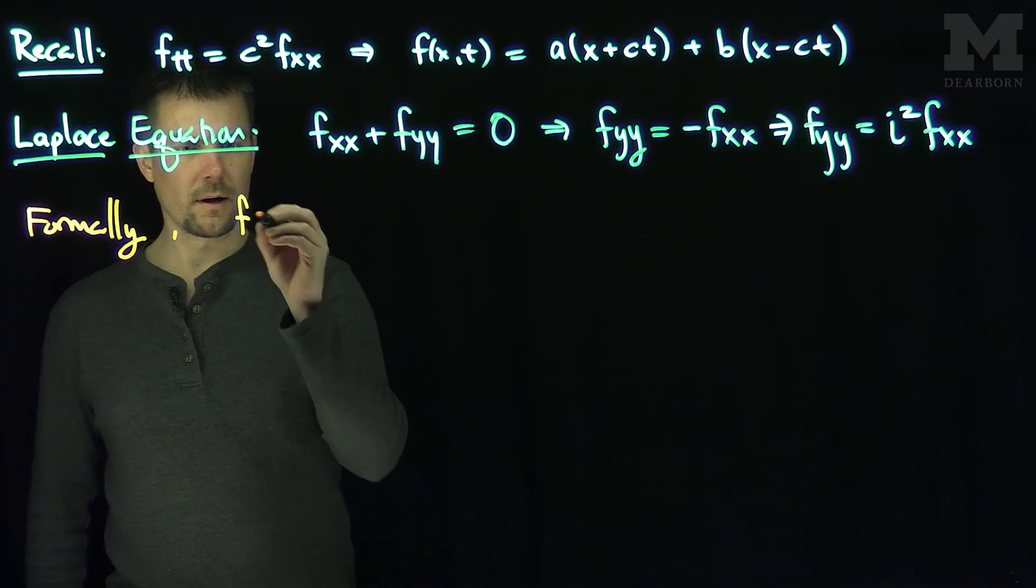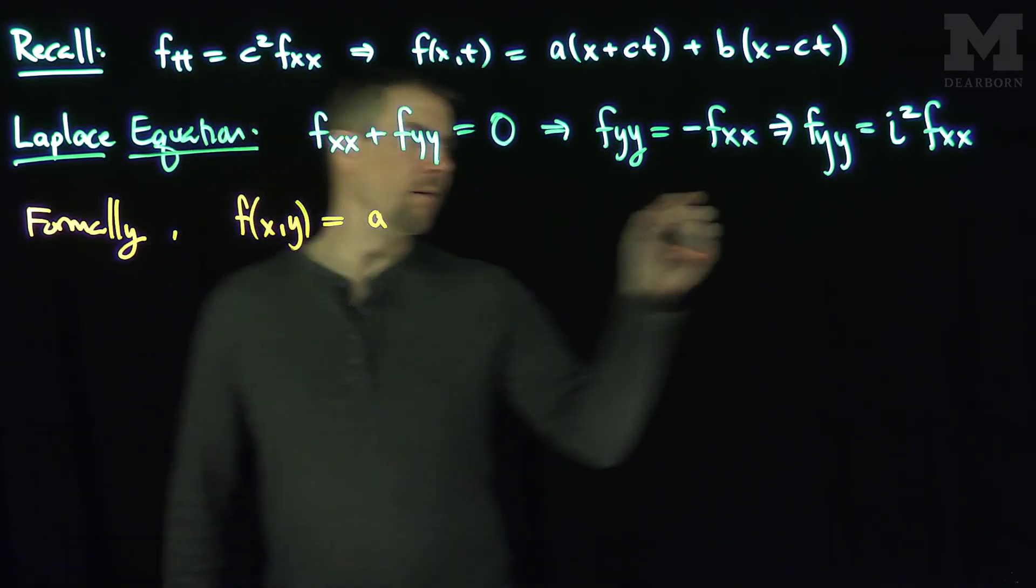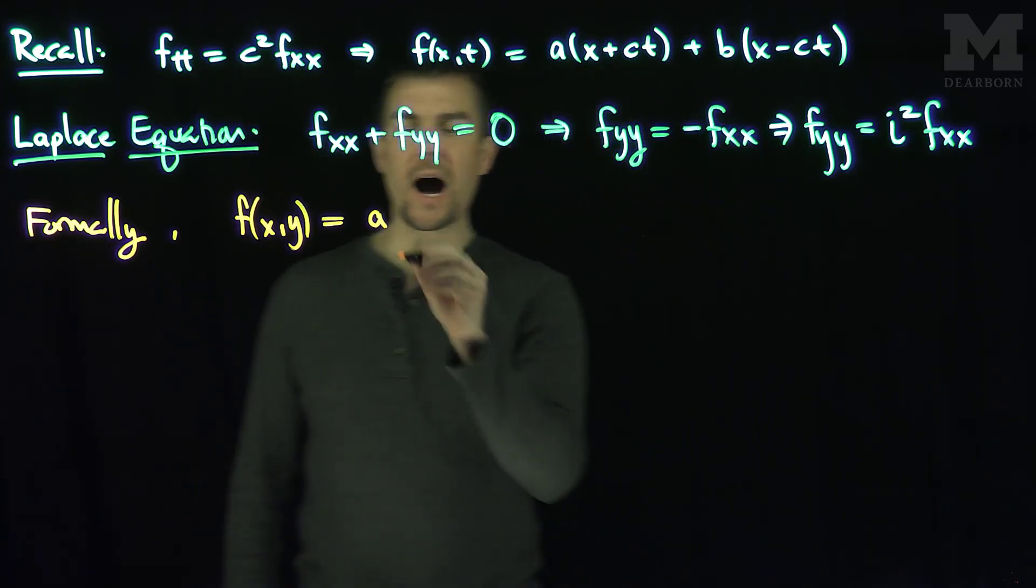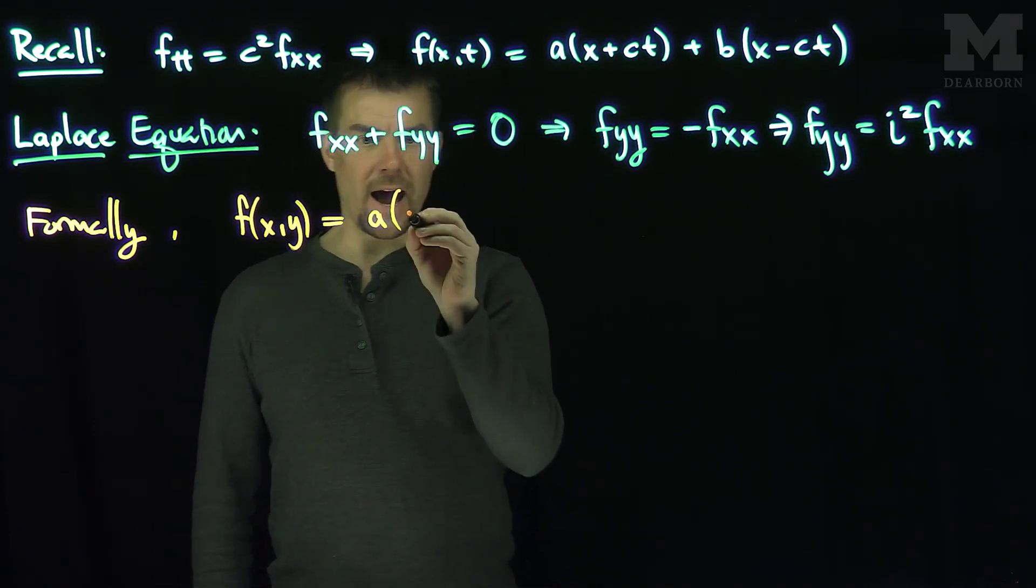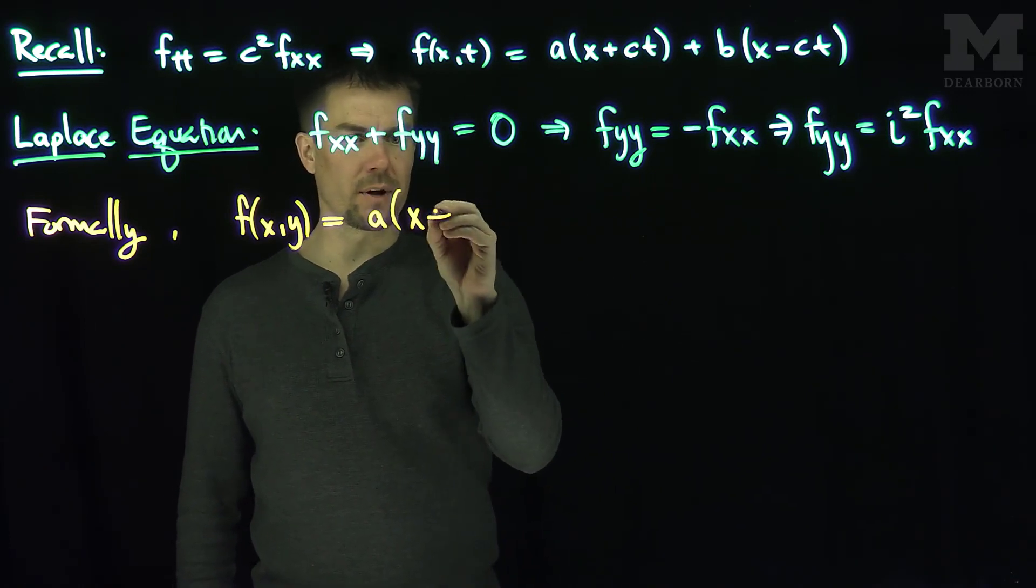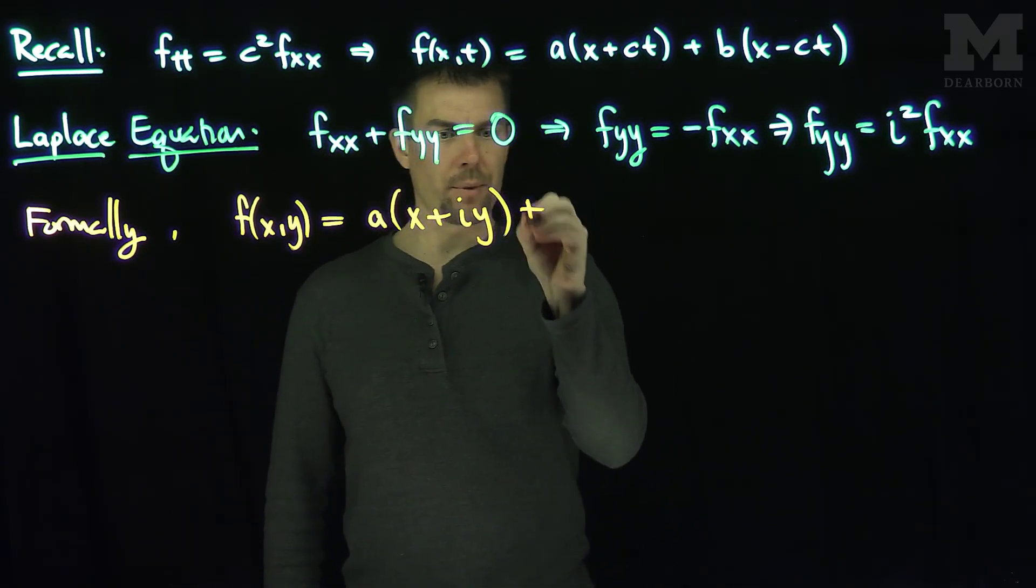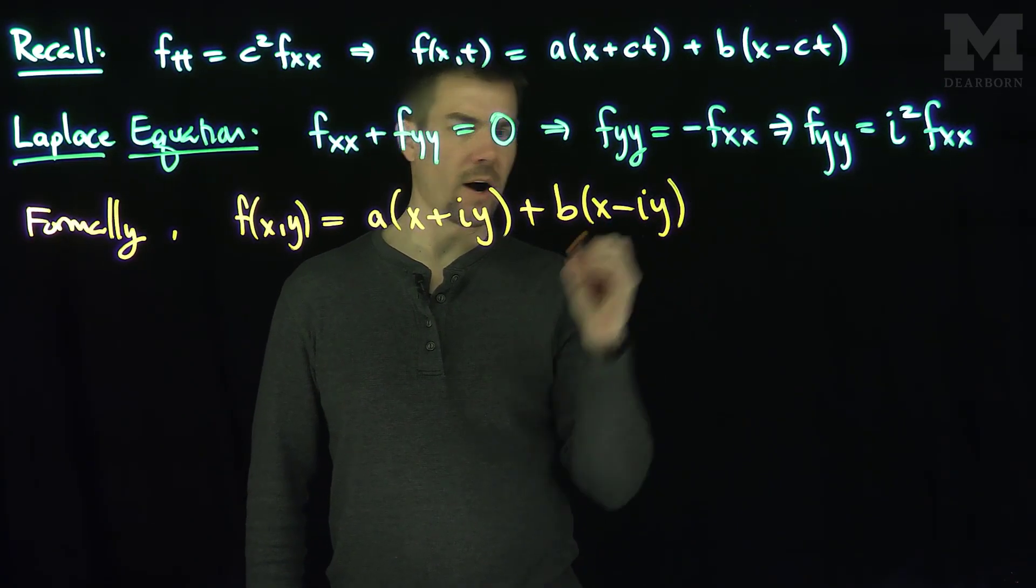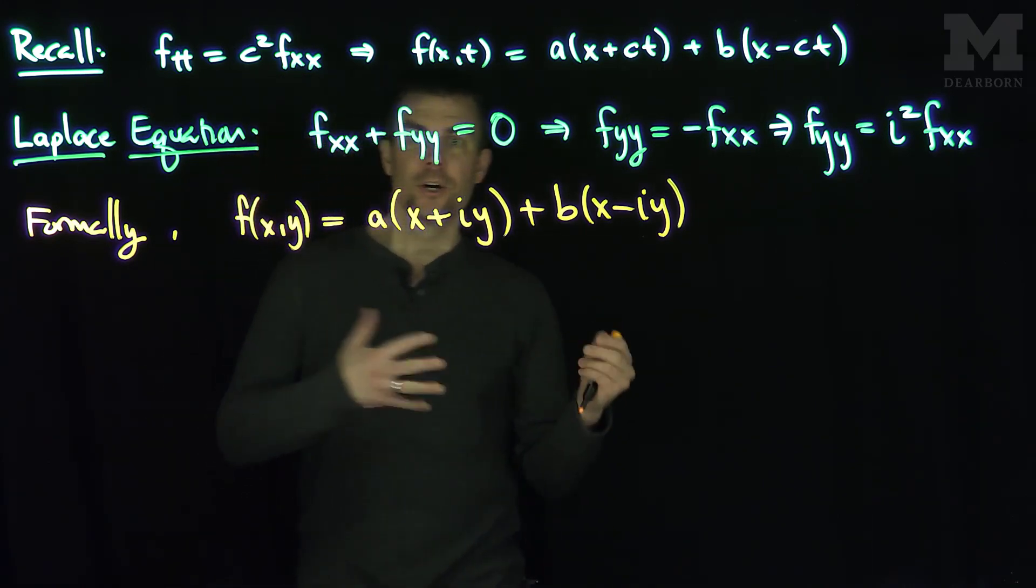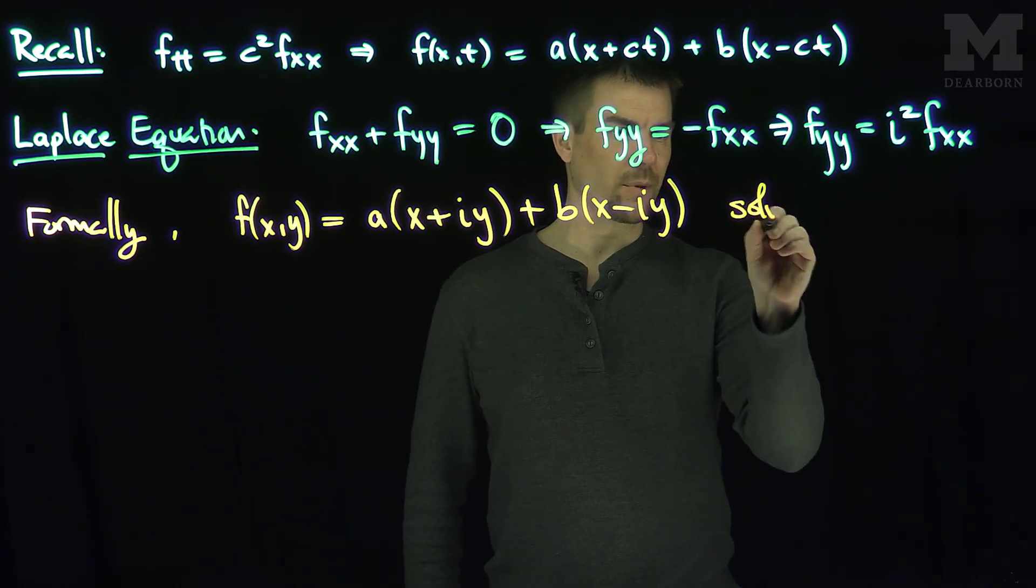So f(x,y), which is some function a of, now playing the role of t is going to be y, and playing the role of c is going to be i. So x is x, c equals i, so I'm going to plug in an i here, plus i times y, which is being played by t. And then plus b(x - iy). So it looks like functions of x + iy and x - iy should at least formally solve the Laplace equation.